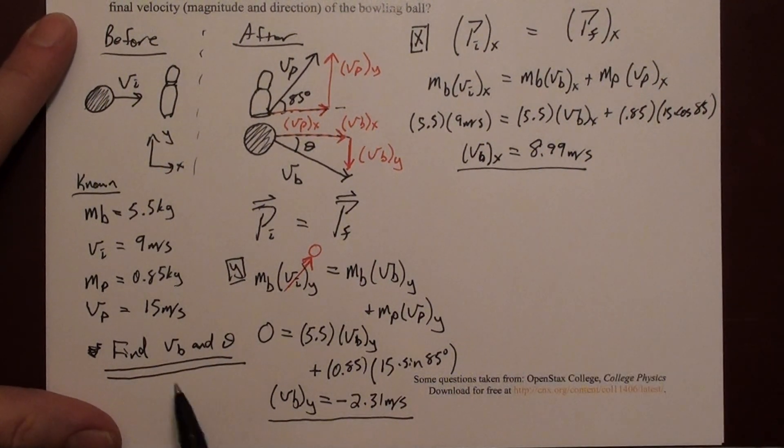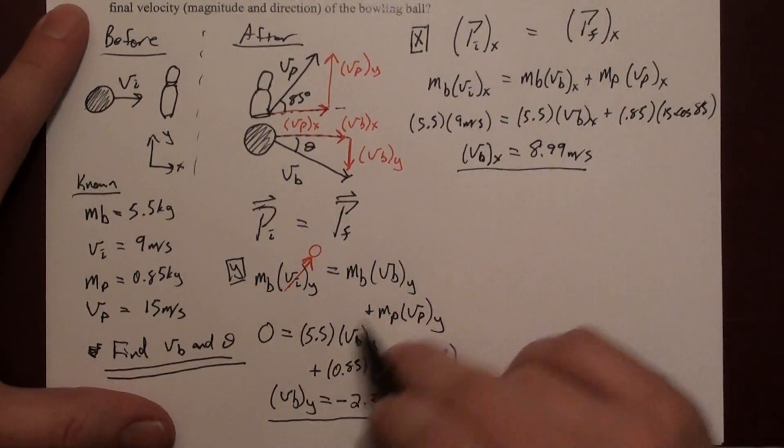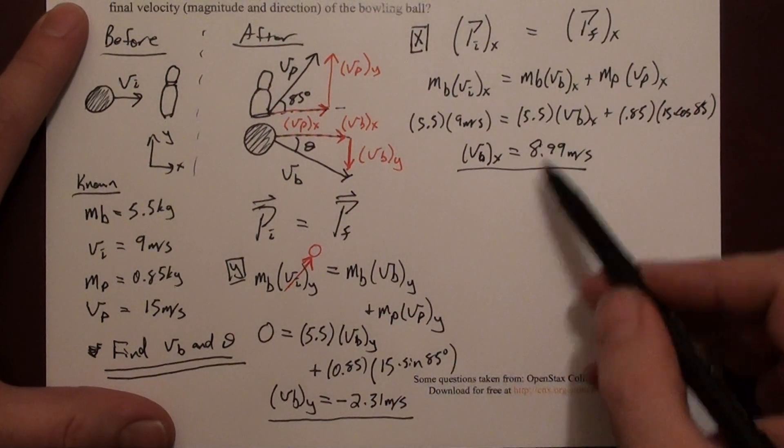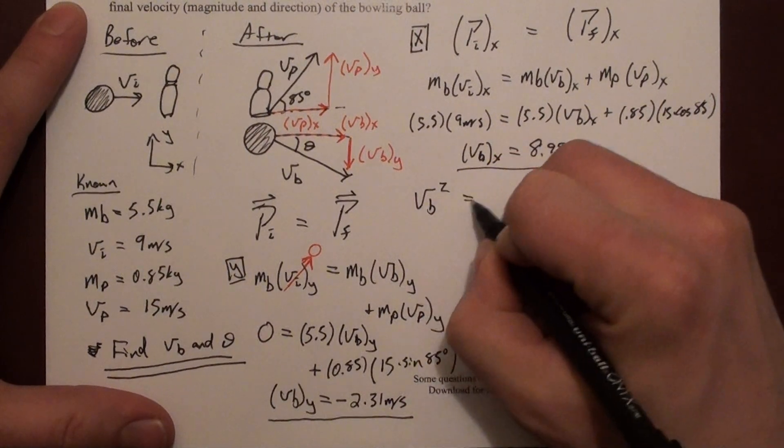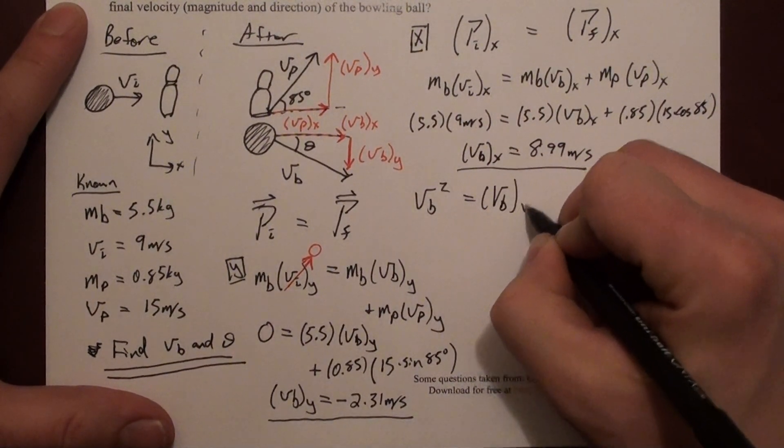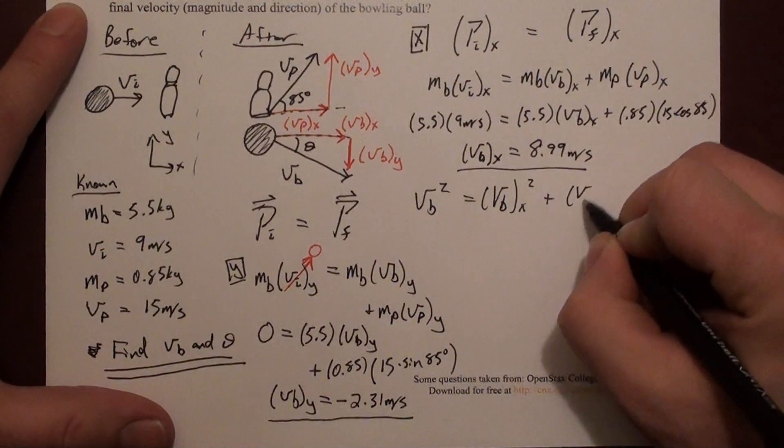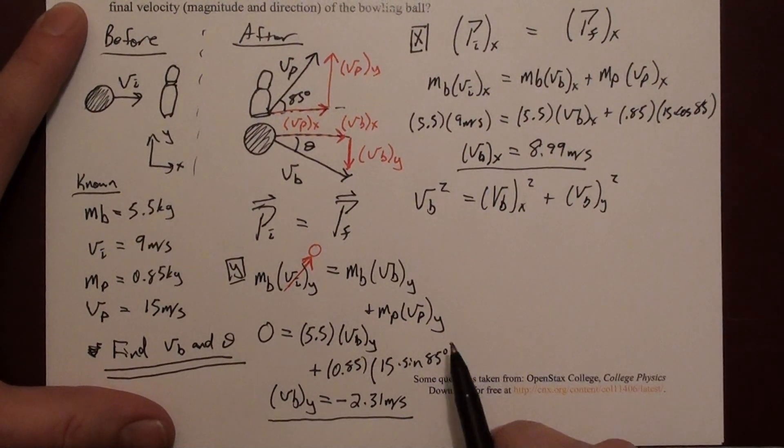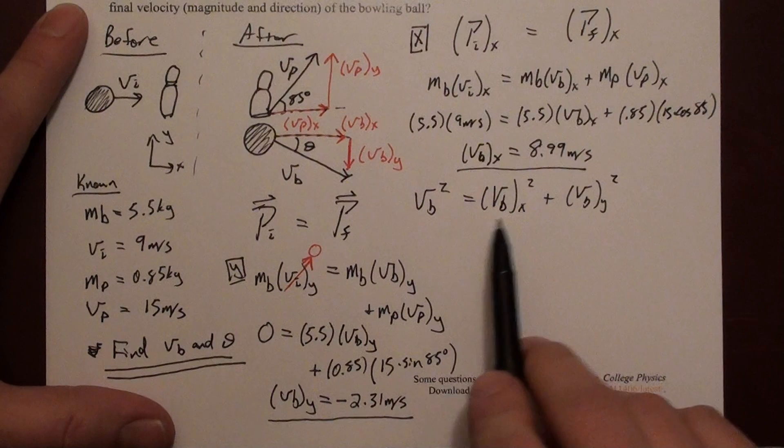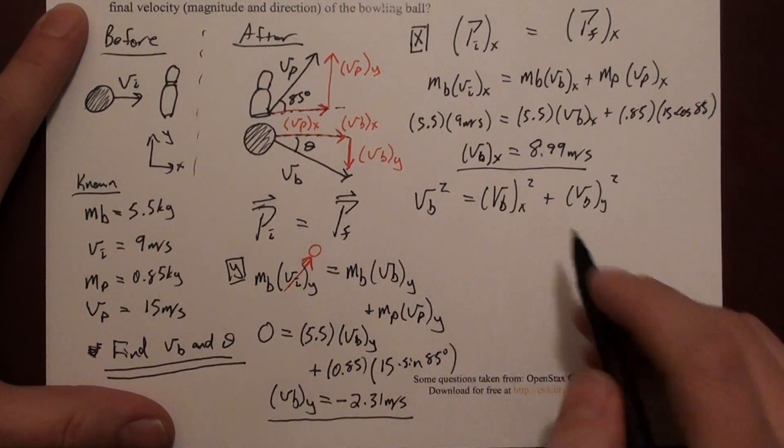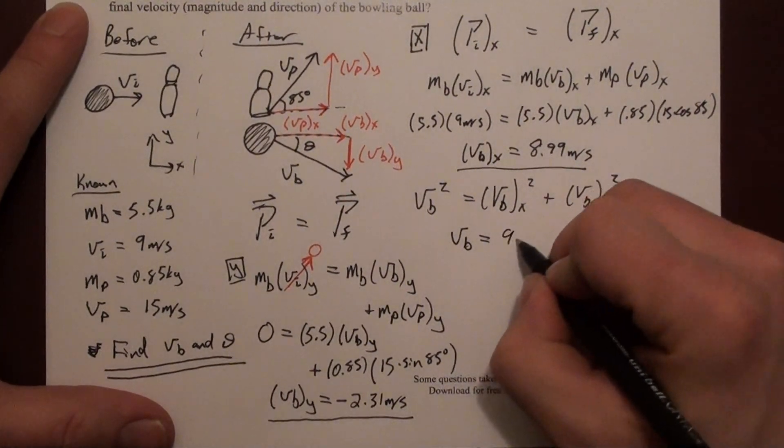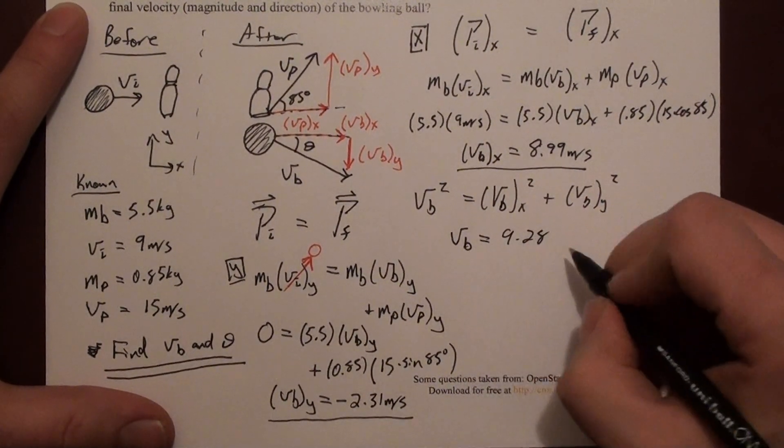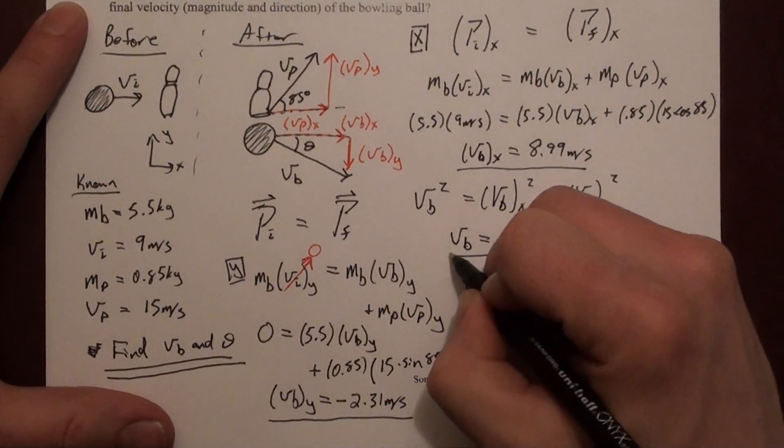I'm pretty much there. I just need to find theta and vb. To find the full vb, I can just use Pythagorean theorem, to say vb squared is vb x squared plus vb y squared. I'm not going to write them down here, but if you do that calculation, what you get is 9.28 meters per second. So that's part of the answer.